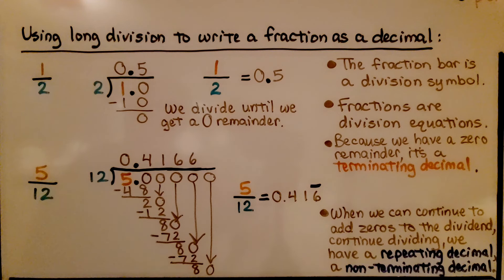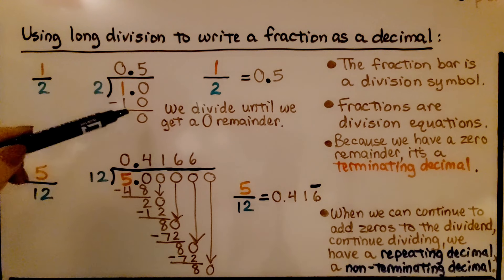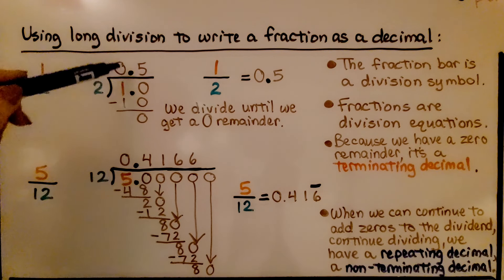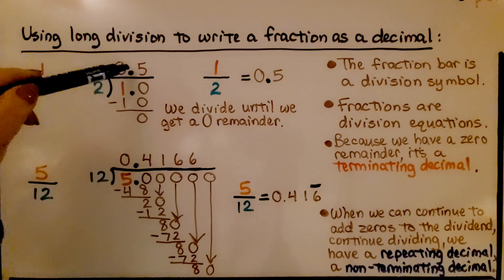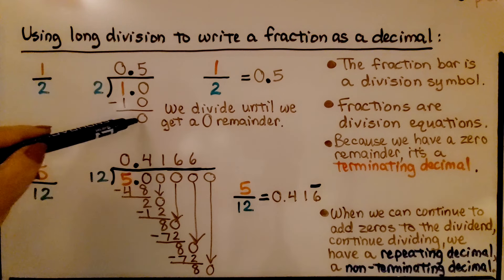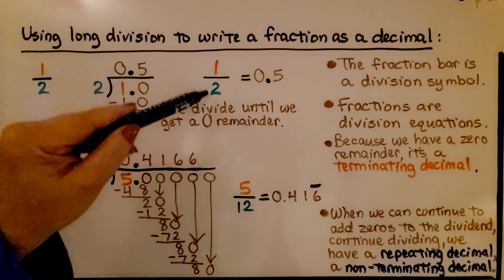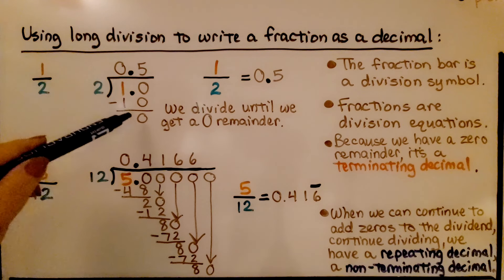Using long division to write fractions as a decimal: if we have 1 half, we do 1 divided by 2. We divide until we get a 0 remainder. 2 can't fit into 1, so that's 0. But 2 can fit into 10 — we put a decimal point and it goes directly up in the quotient. 2 times 5 is 10, we subtract and get 0. So 1 half is equal to 5 tenths, or 0.5. The fraction bar is a division symbol; fractions are division equations. Because we have 0 for our remainder, it's a terminating decimal.